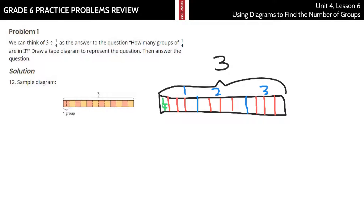I'm not going to write 1/4 every single time, but there's a 4th, here's a 4th — 2, 3, 4, 5, 6, 7, 8, 9, 10, 11, 12. There are 12 one-fourths in 3. So, how many groups of 1/4 are in 3? Same thing as 3 divided by 1/4, and that's going to be 12.